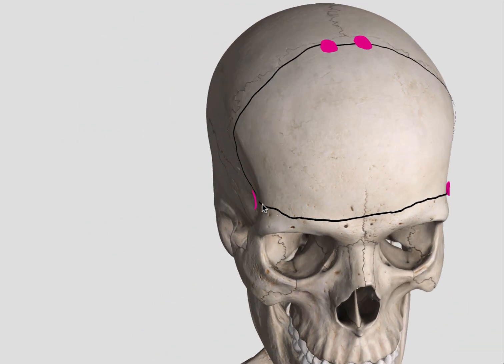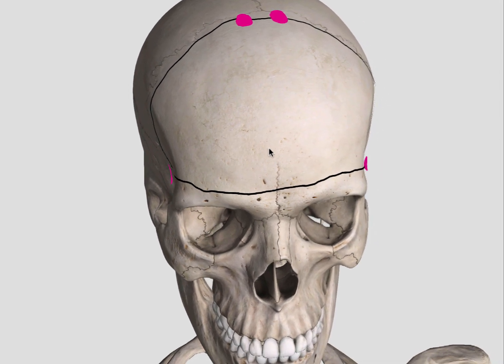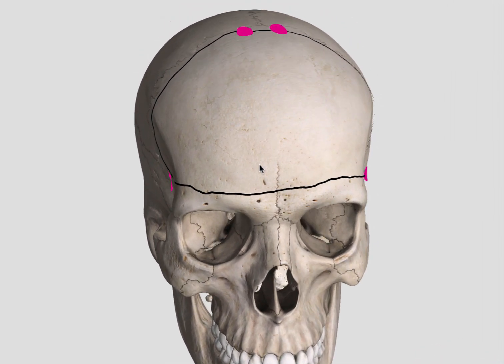When making this cut, you want to make sure it's above the frontal sinus. You have to check the CT scan to see how big the frontal sinus is. In some people, the frontal sinus can extend quite high.